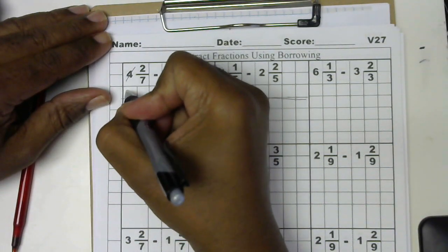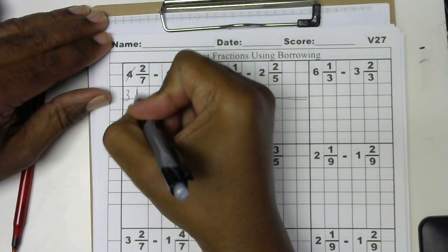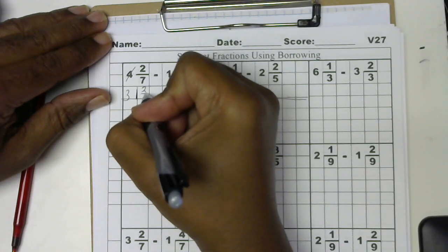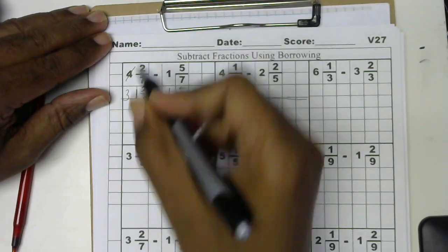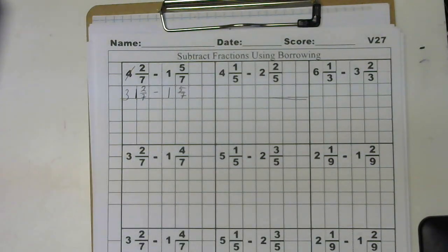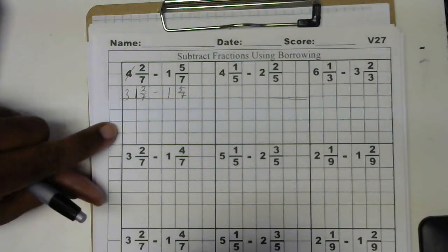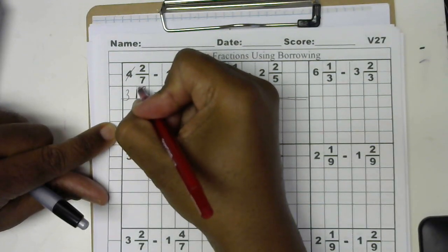Borrowing 1 from the 4 gives me a 3. Here's the one that was borrowed next to the 2 sevenths minus 1 and 5 sevenths. Next I'm going to take the one that I borrowed and multiply by 7 and add 2.